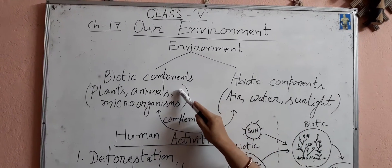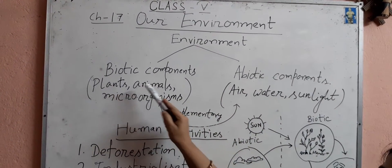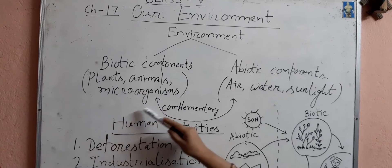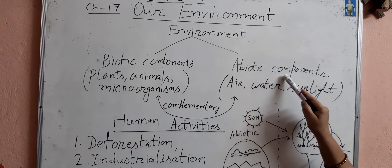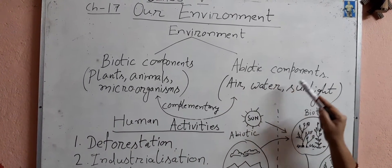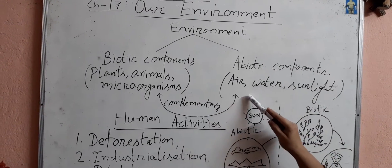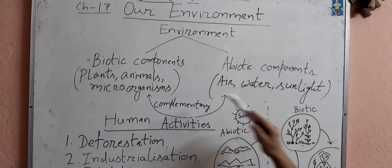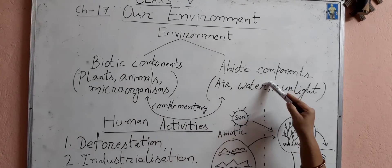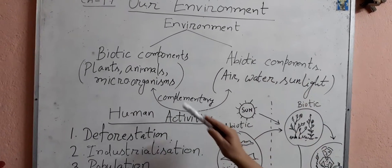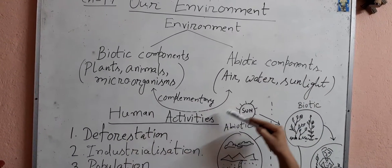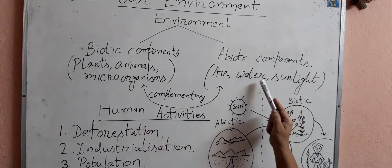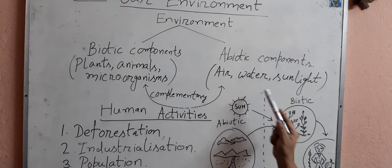Biotic components include living things like plants, animals and micro-organisms. And abiotic components include non-living things like air, water and sunlight. Biotic components and abiotic components — these two components are complementary to each other. They depend upon each other for their survival.